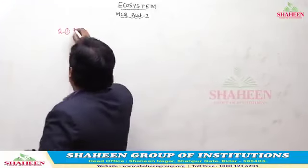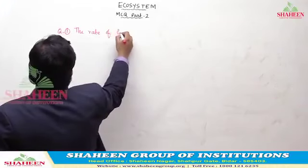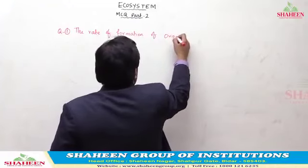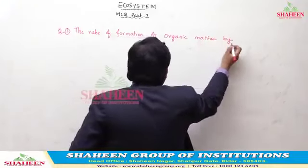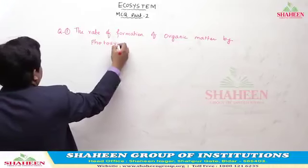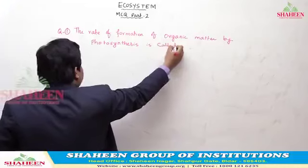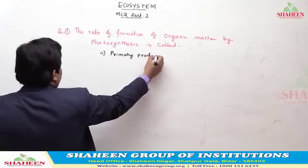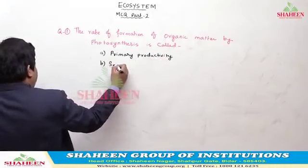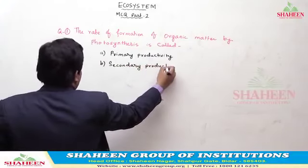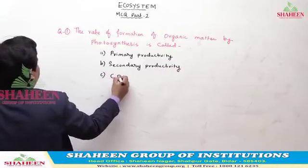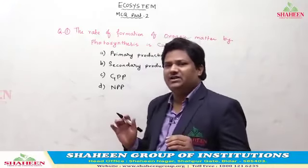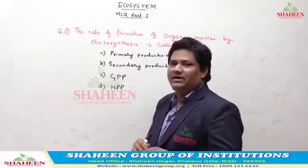The rate of formation of new organic matter by photosynthesis is called — options are: first, primary productivity; second, secondary productivity; third, GPP and NPP. So how is the definition of primary productivity different from the definition of GPP? That is what we are discussing here.